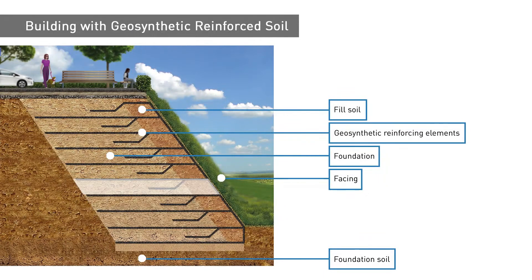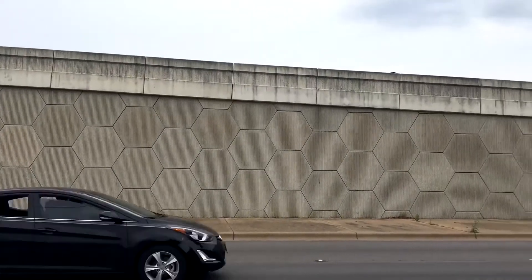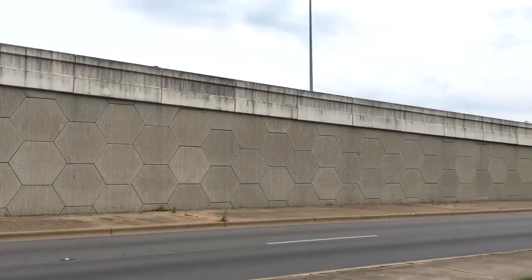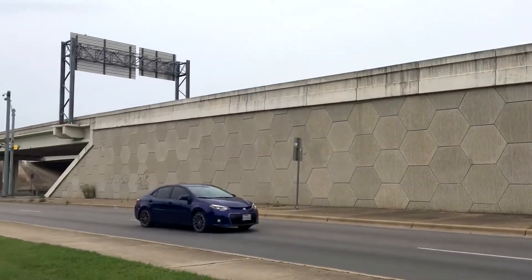Compacted soil is added in layers with reinforcing elements in between each layer. Most reinforced retaining walls have a facing of interlocked concrete panels, usually with some kind of decorative pattern. And these facing systems are what make them so recognizable.